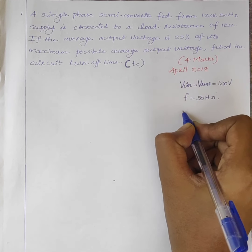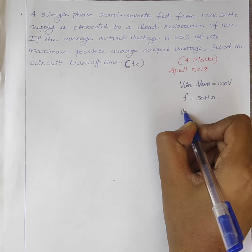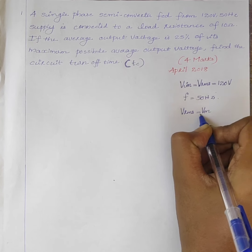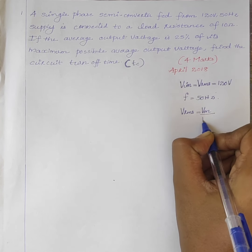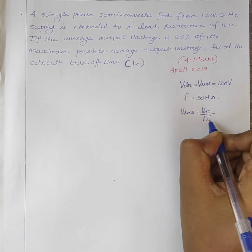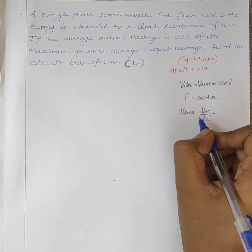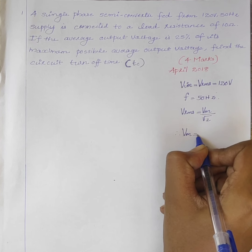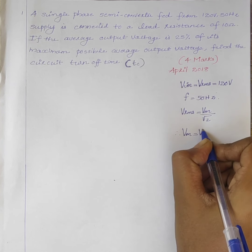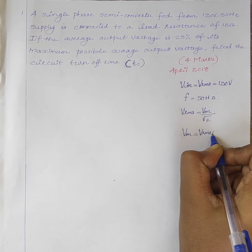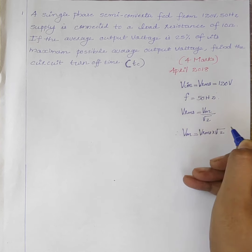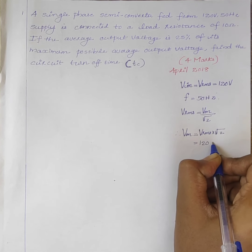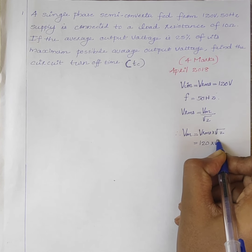We know that VRMS is equal to Vm divided by root 2, where Vm is the maximum value. Therefore, Vm is equal to VRMS multiplied by root 2, which is equal to 120 into root 2.